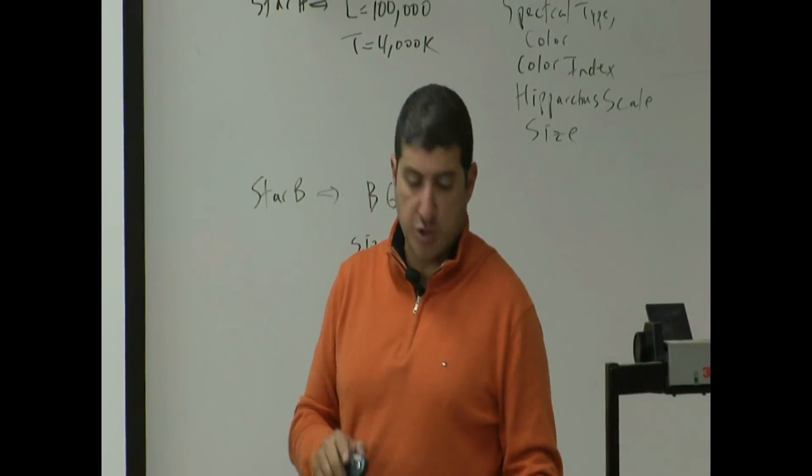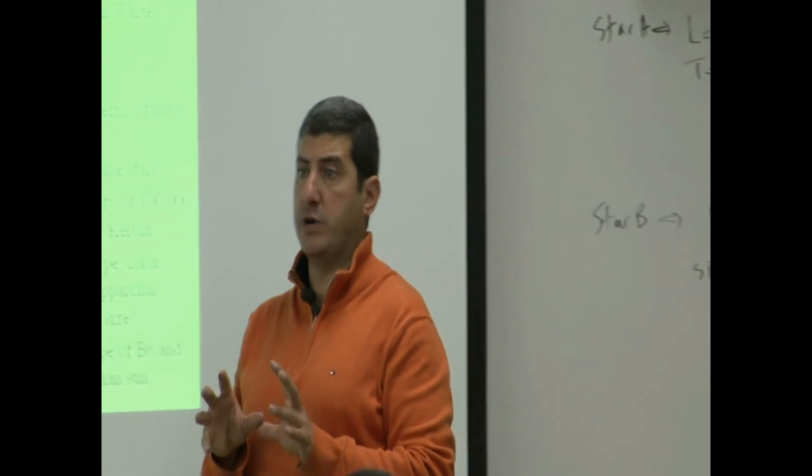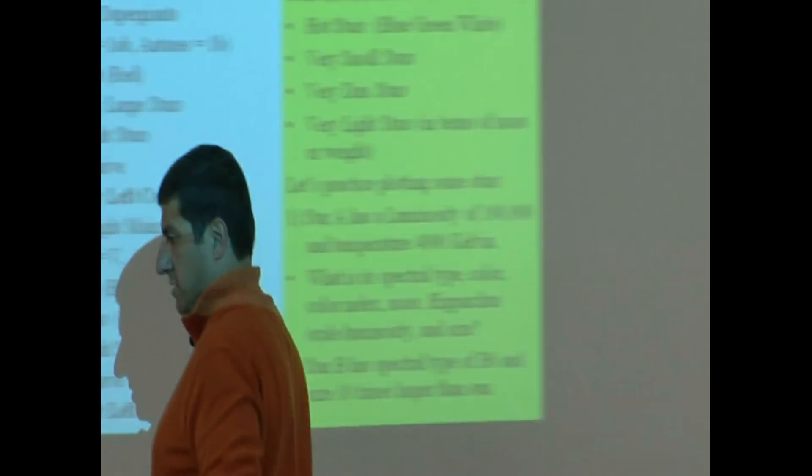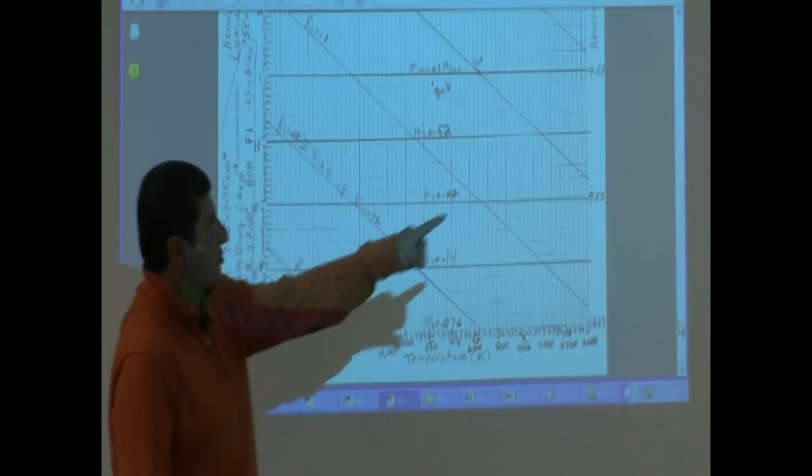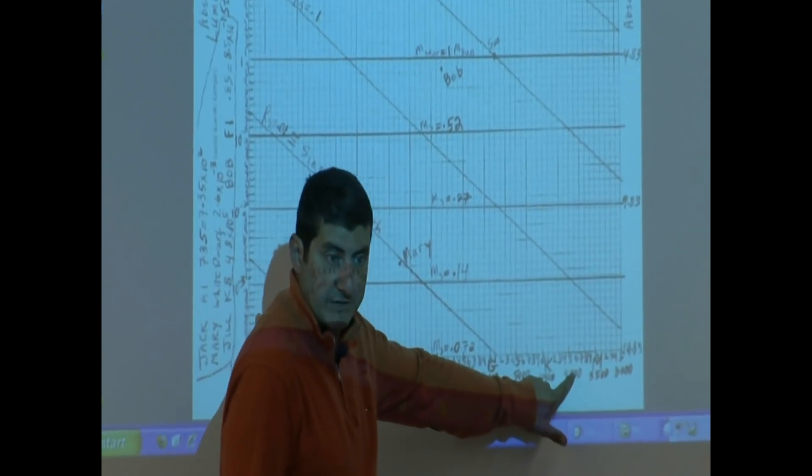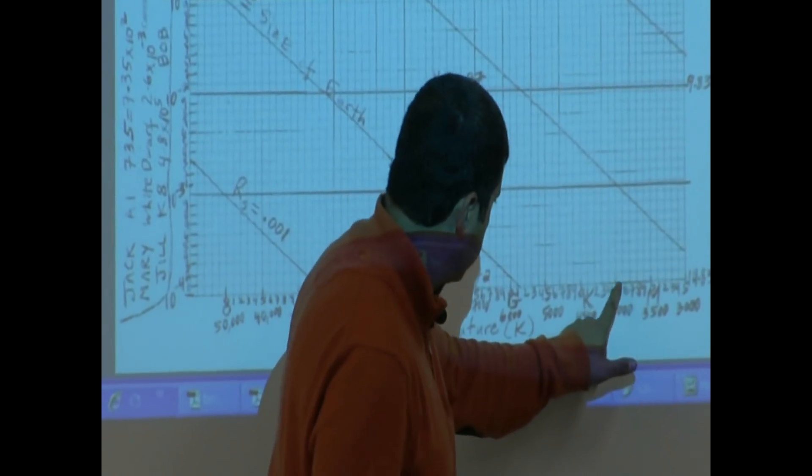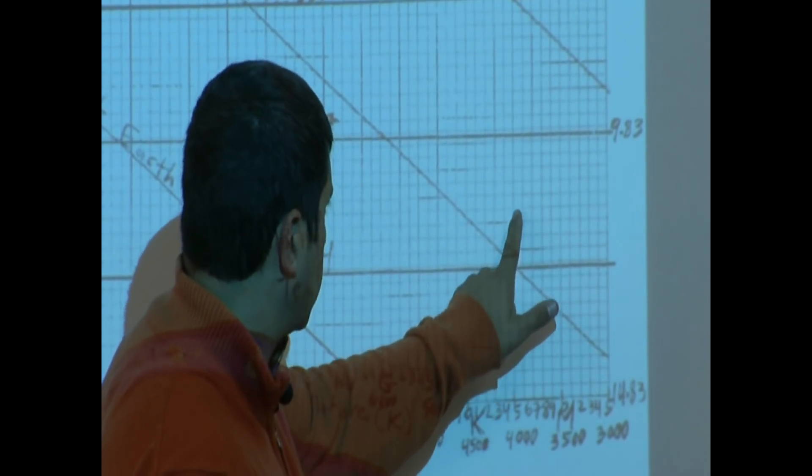What we're going to do is we're going to go to that HR diagram example from my website. So where would star A go? A hundred thousand, temperature four thousand Kelvin. We would find four thousand Kelvin, we would go up. Take this line and then take it straight up.